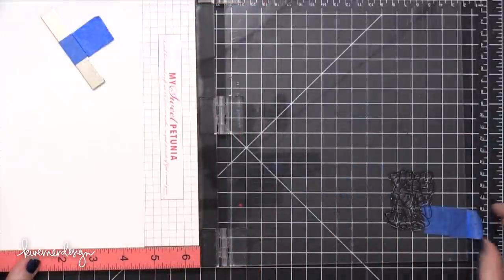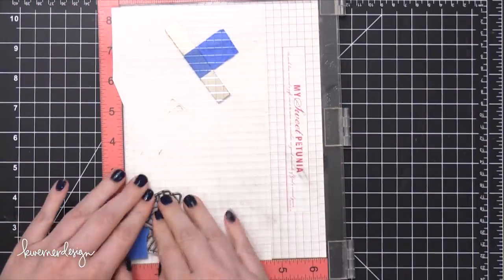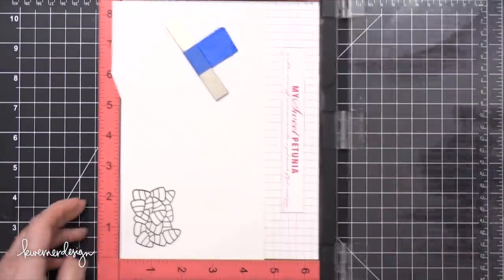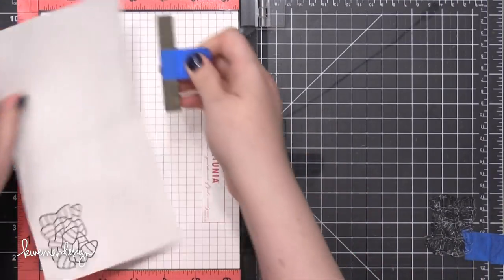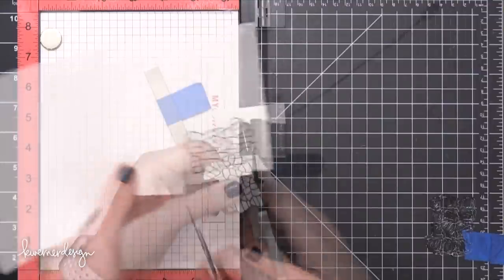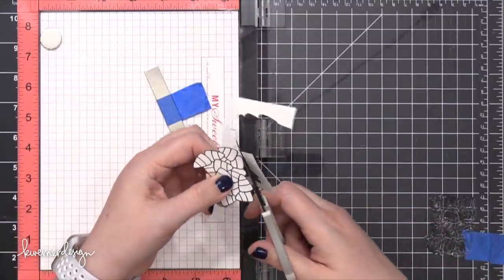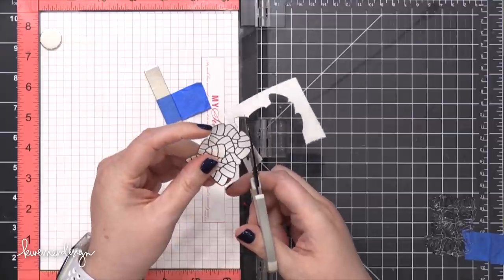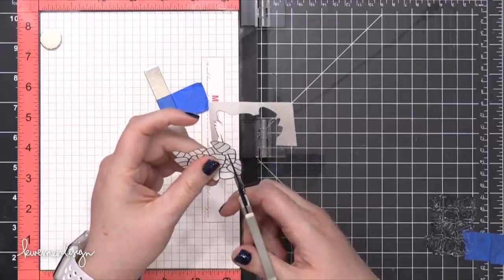I've got some masking paper inside my MISTI stamp positioning tool and then I've inked up that stamp with some black ink. Now this is the same black ink I'm eventually going to be using on my project and I'm doing it this way because I don't want to have to clean off my stamp really well right away. And just by using the same type of ink I won't have to worry about that.